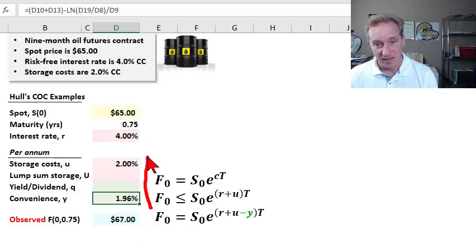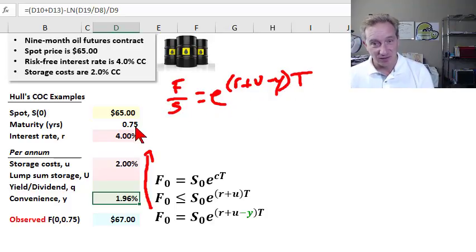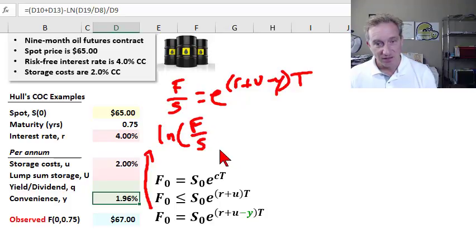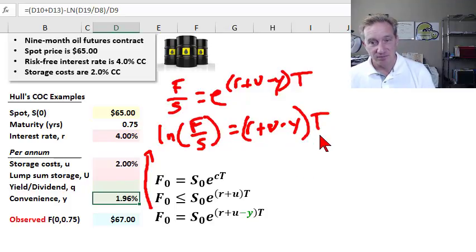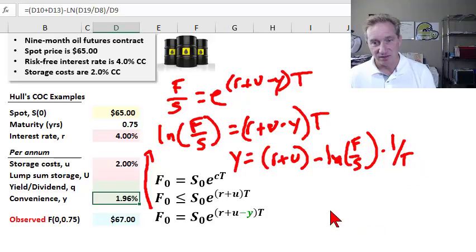And then for some of you, that math will be pretty straightforward. But really, I could just take this equality here, divide each side by the spot price. Then I'll get e raised to the r plus storage minus convenience. Right. And then I can liberate my exponent by taking the natural log of both sides. So I end up with natural log of the ratio, future divided by spot. Then equals my risk free rate plus storage minus convenience, multiplied by the maturity. And then I can solve for my convenience yield directly by it's going to be r plus u minus the natural log of futures divided by spot. Right. Divided by, times one over T. OK,